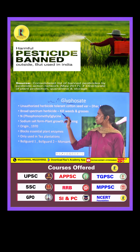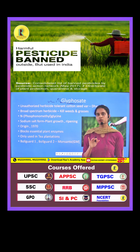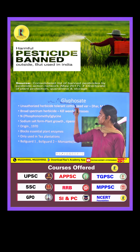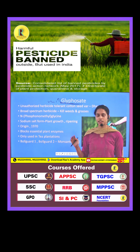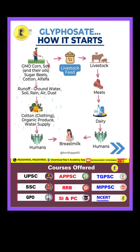In this context, glyphosate is a herbicide whose main action is to kill weeds. Glyphosate is a broad-spectrum herbicide, which means it helps to kill a wide range of weeds in a field.